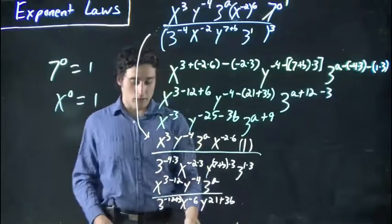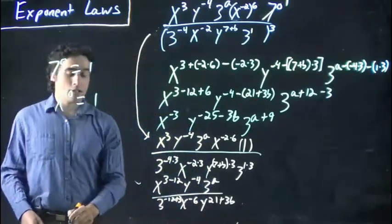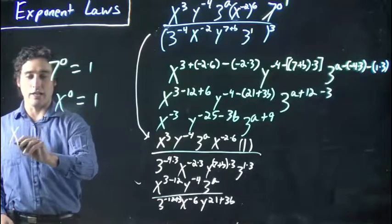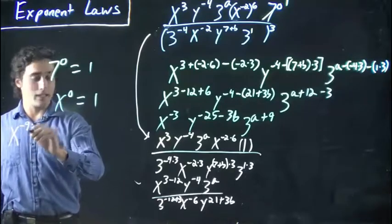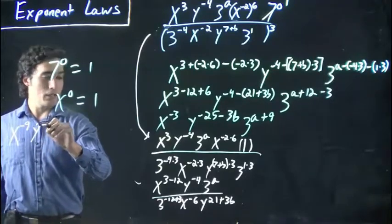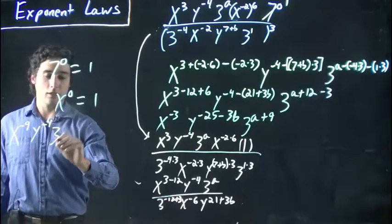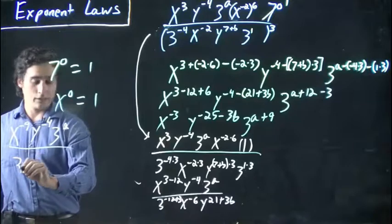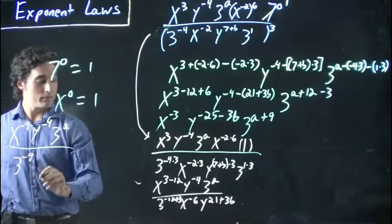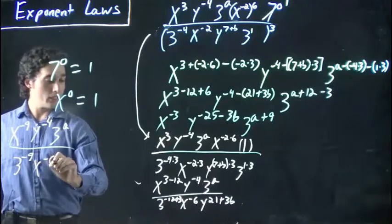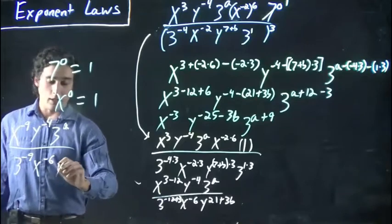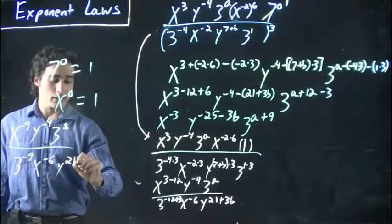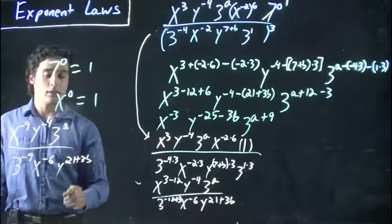And then we'll continue it over here. I'm going to finish it off right here. We have, just going to kind of rewrite it where we're at, x to the minus 9, y to the minus 4, 3 to the a, 3 to the minus 9, x to the minus 6, and y to the 21 plus 3b.